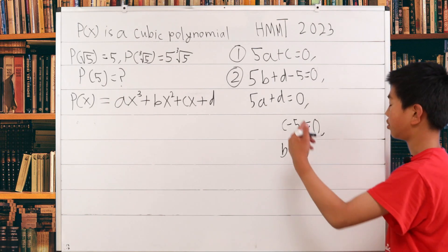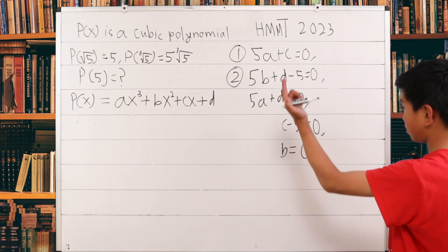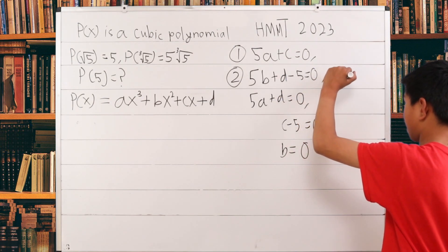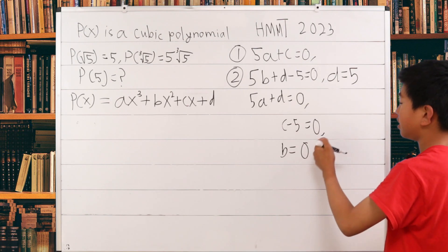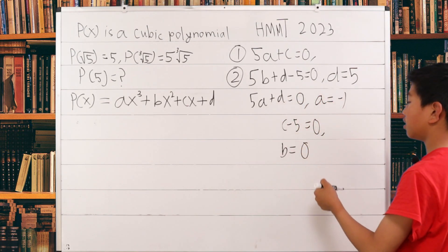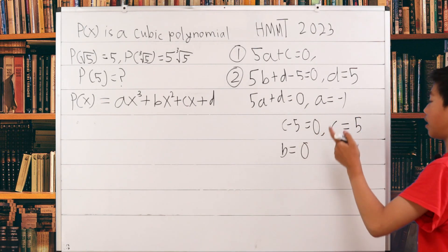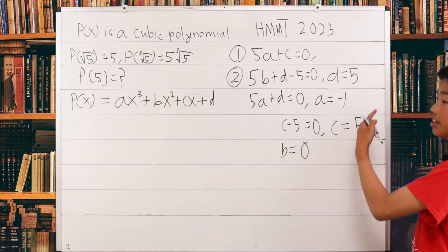What we do here is we can just solve for a, b, c, and d. Since we know that b is 0, 5b + d - 5 = 0, so d is 5. We know that d is 5. Here, 5a + d = 0, so a is -1. c - 5 = 0, so c is 5. So we have our a, b, c, and d.